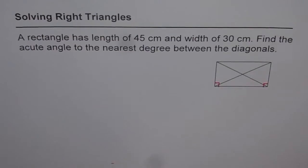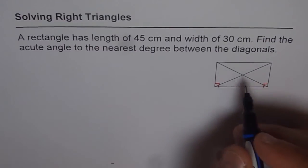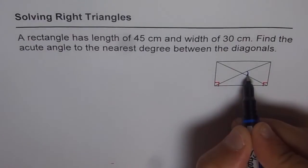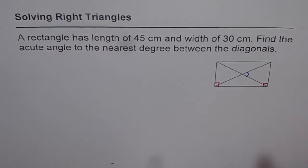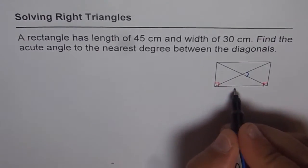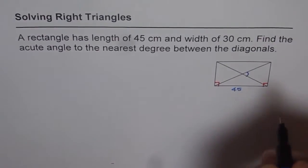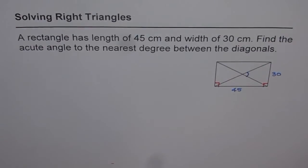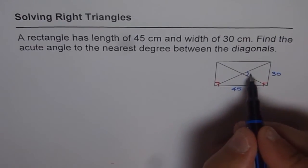What we need to find in this rectangle is the acute angle between the diagonals. These are the two diagonals and that's the acute angle which we need to find. Rectangle is given to us whose dimensions are 45 cm. So this is 45 and the width is 30.